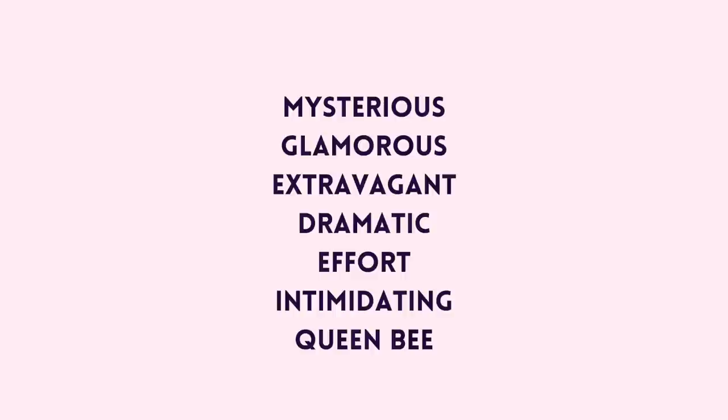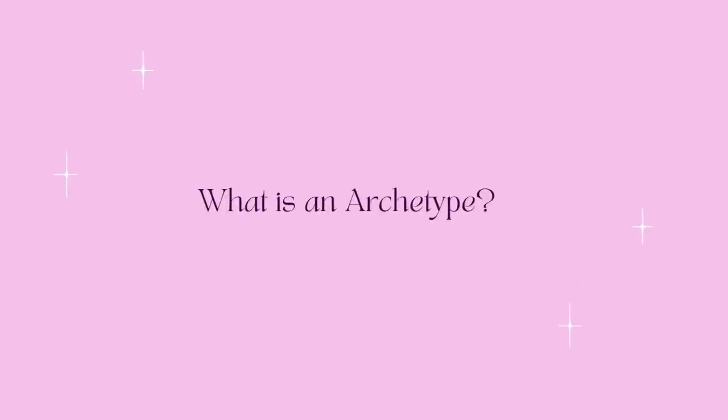The upness keywords are: mysterious, glamorous, extravagant, dramatic, effortful, intimidating, and the queen bee concept. An archetype basically answers the question: who has this essence? It's an ideal type of person — a collection of traits, general observations, and style tips that suit this type of person.